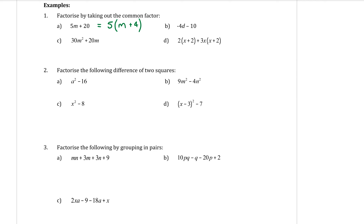For part b, we have −4d − 10. Negative signs can also be factors — if both terms are negative, you must take out the negative as a common factor. So we bring out −2. Then −4d divided by −2 gives positive 2d, and −10 divided by −2 gives positive 5. Answer: −2(2d + 5).